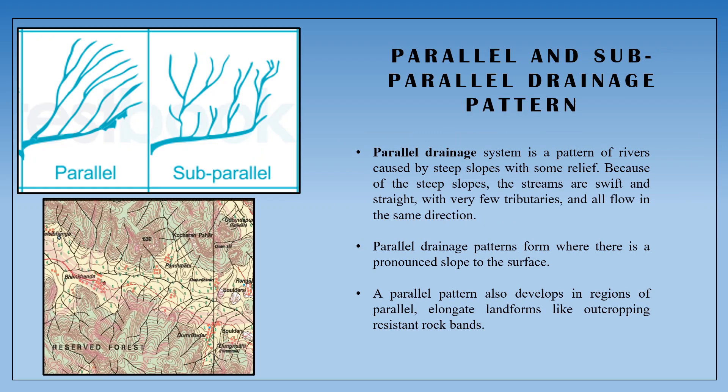Next, the Parallel and Subparallel Drainage Pattern. In this pattern, the tributary streams join the main stream in a parallel manner. This occurs where the land is newly uplifted, causing rivers to flow parallel to each other as they cut downward. This is how you can identify the parallel drainage system.